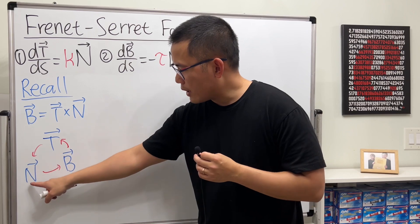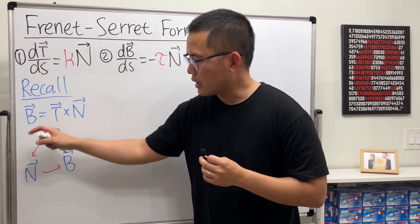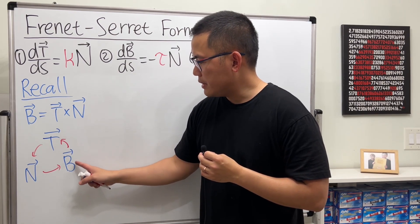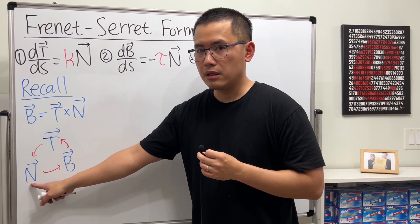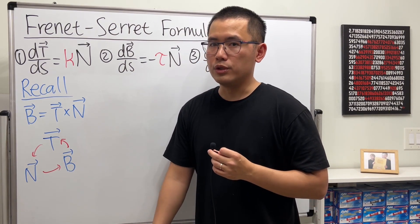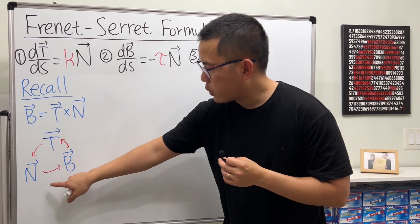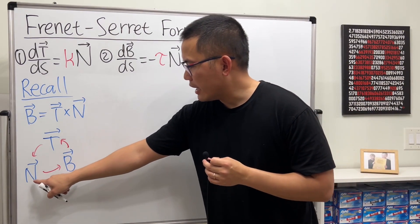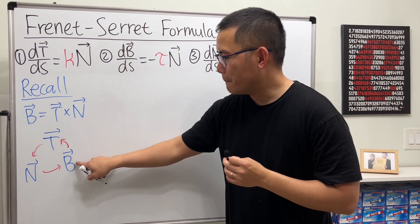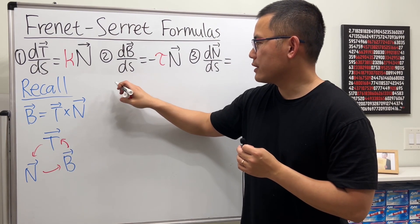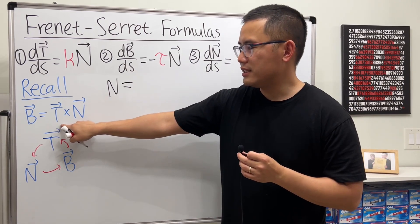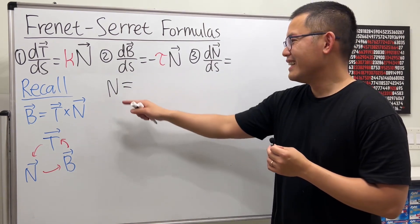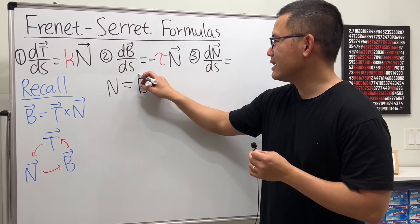Using the diagram: if we go counterclockwise, T cross N gives positive B; B cross T gives positive N. Going backwards gives a negative result — for example, B cross N gives negative T. From this we can see that N equals B cross T, which is quite nice. Even though you could just take the derivative of the original definition and isolate dN/ds, starting with N = B × T is a convenient approach.